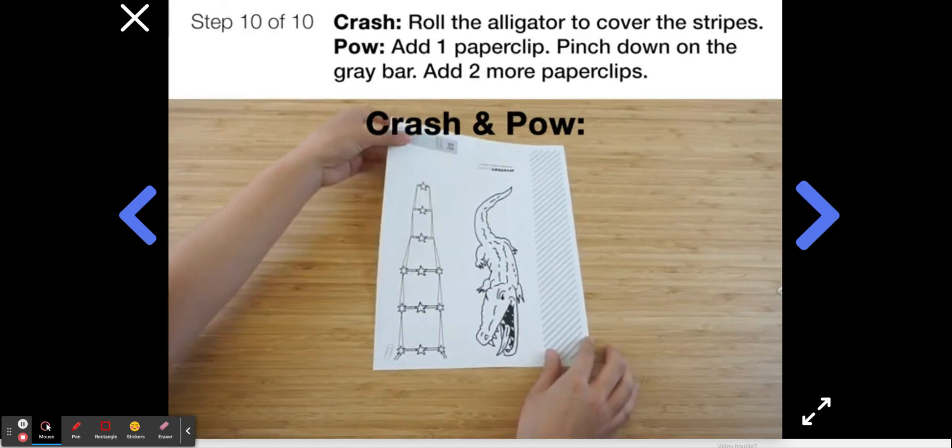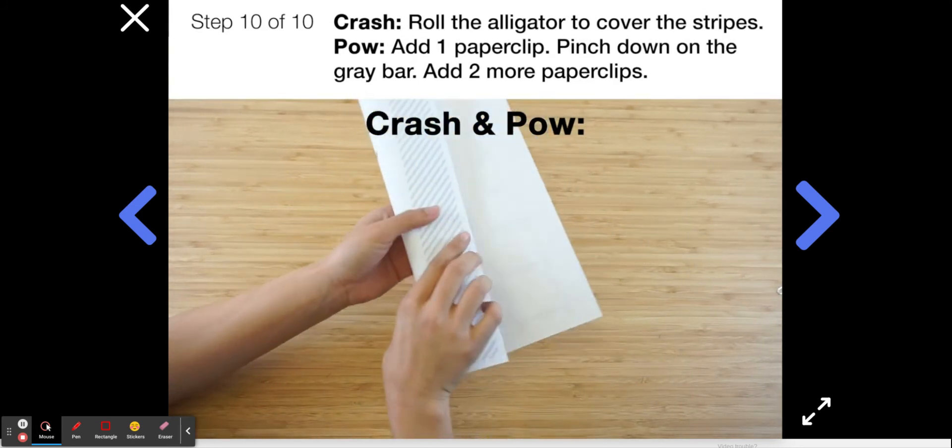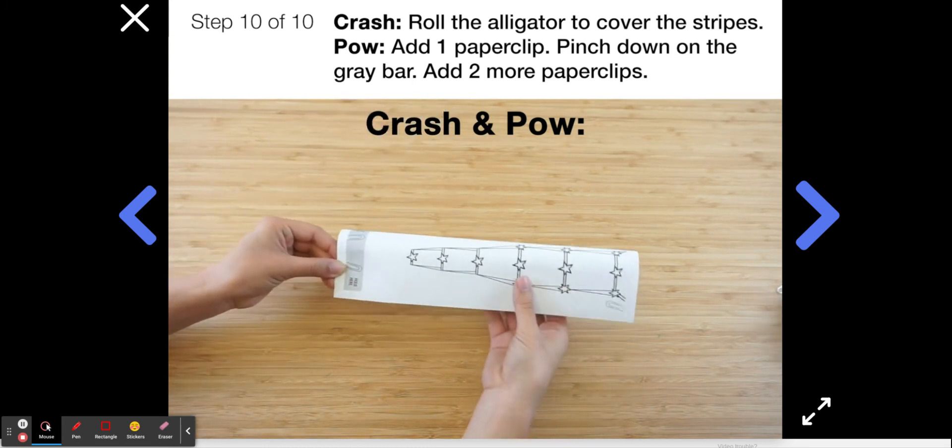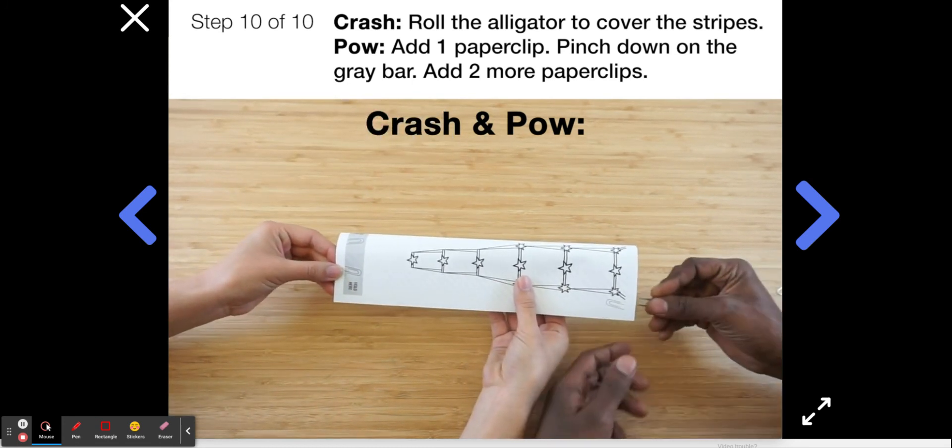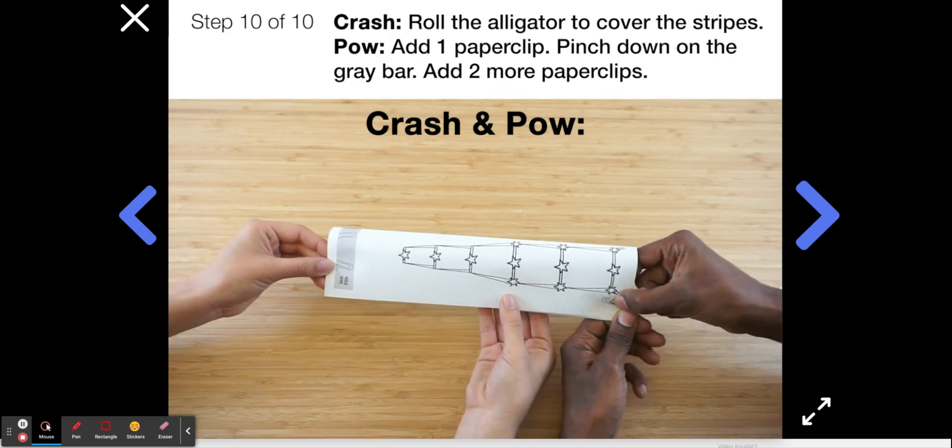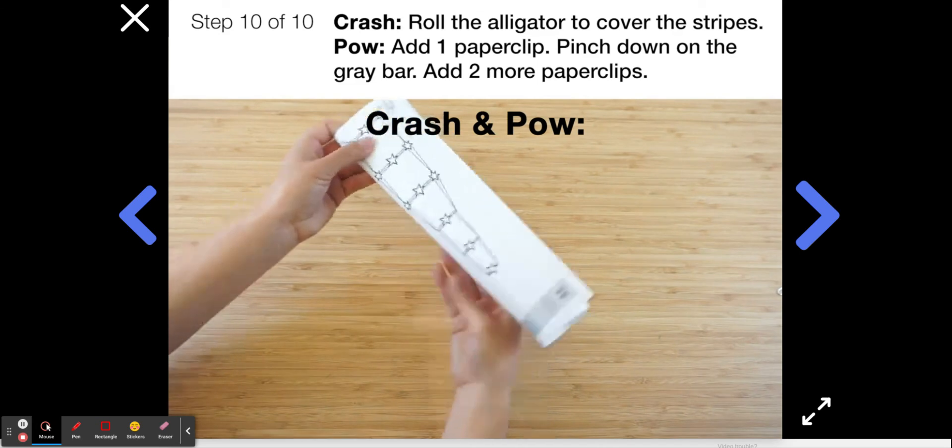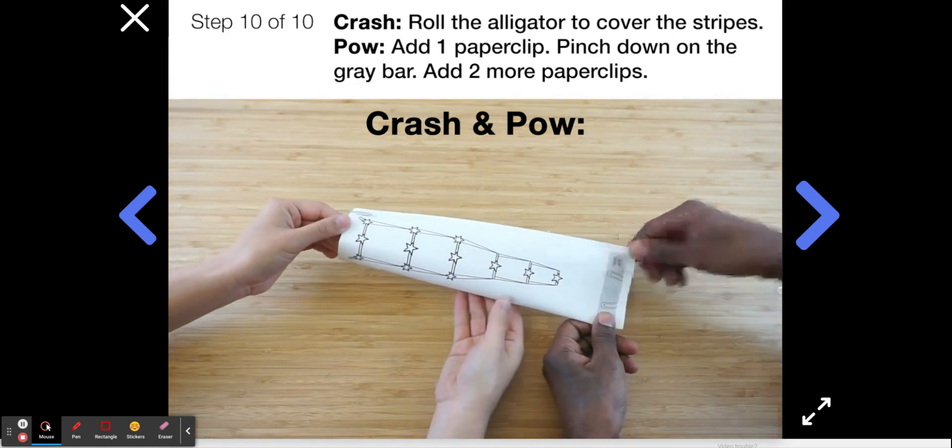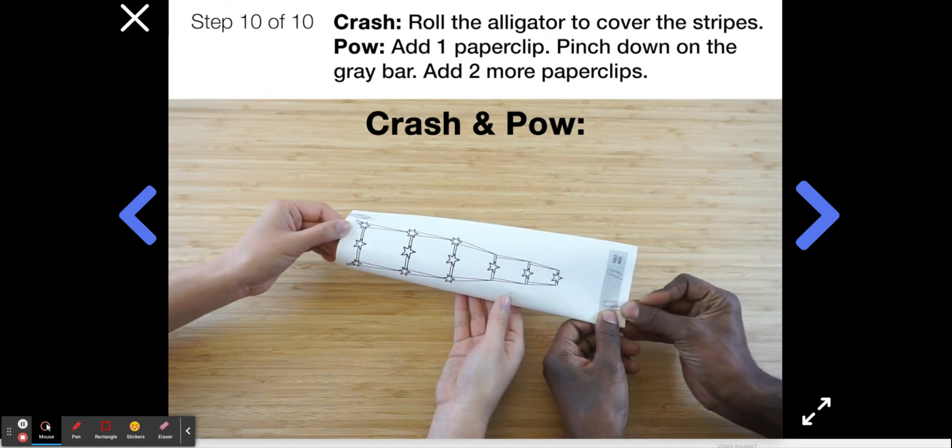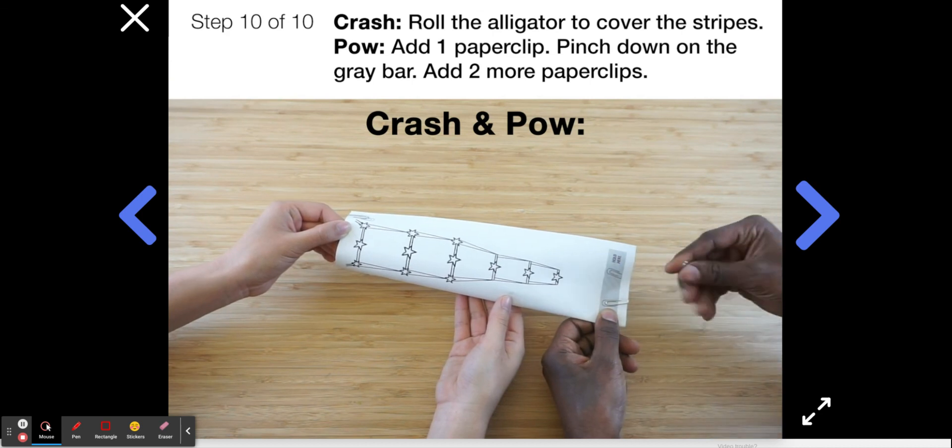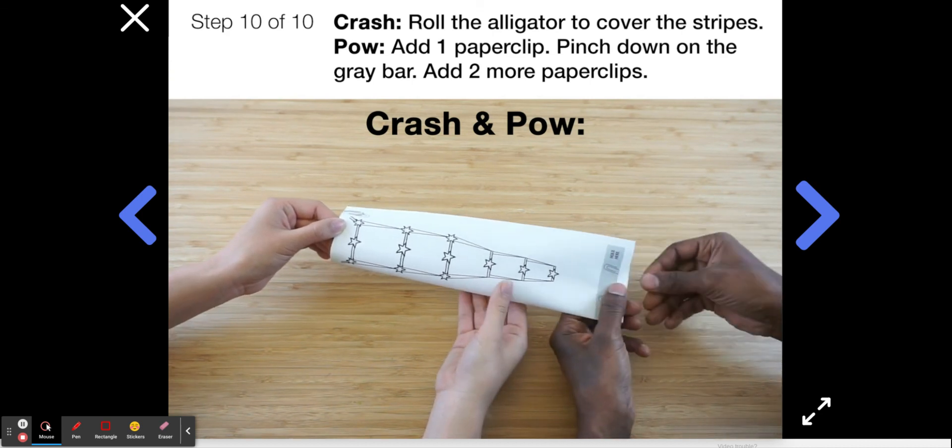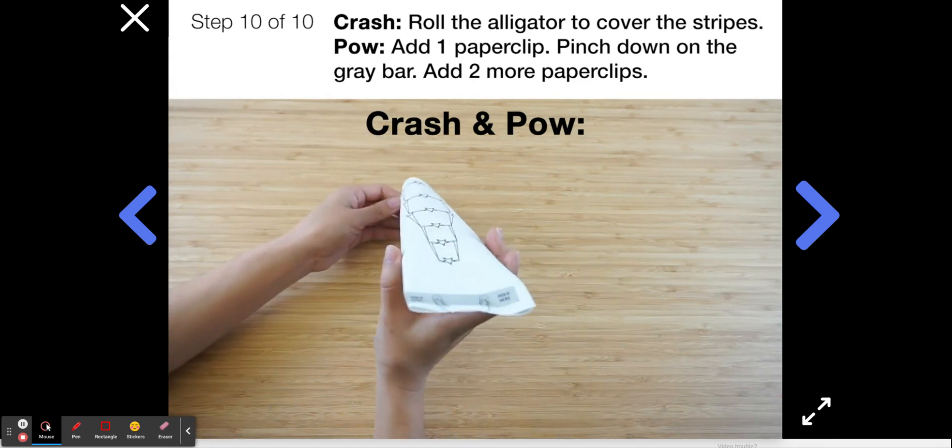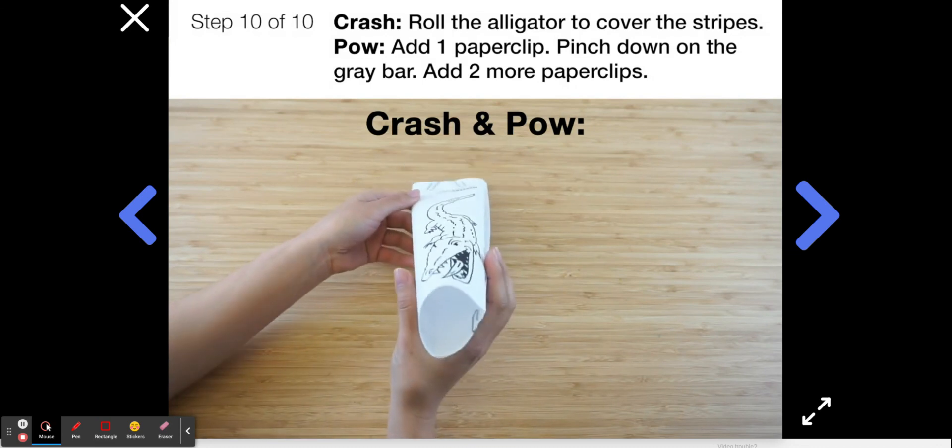Okay, last but not least, time to create the alligator. Here's how to do it. Crash, you'll roll this sheet of paper up like this, so that you cover the striped lines. Then, pow, you'll put one paperclip here near the stars. Then pinch down the gray bar, like this. And after you do that, attach two more paperclips, just like this. When you're done, it should look like this. With one end closed, and the other end, the alligator's mouth, wide open.